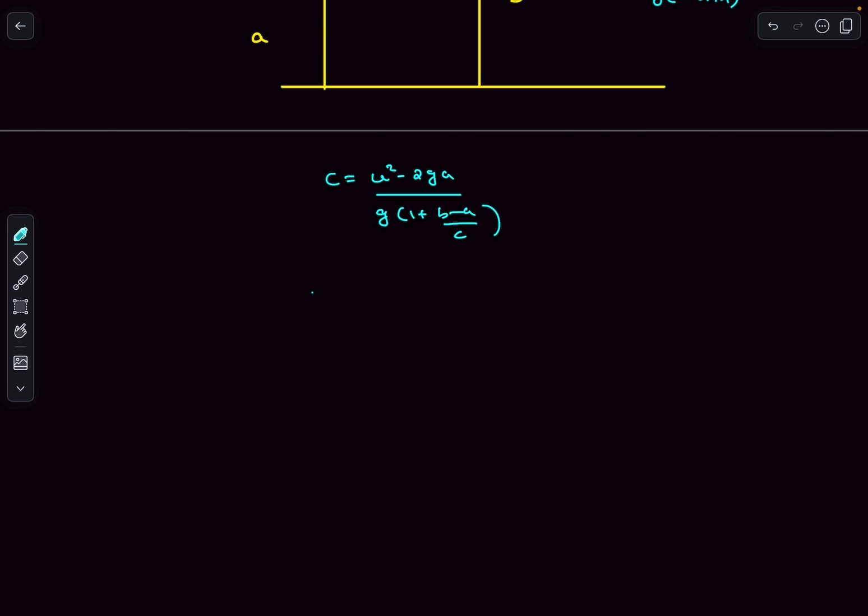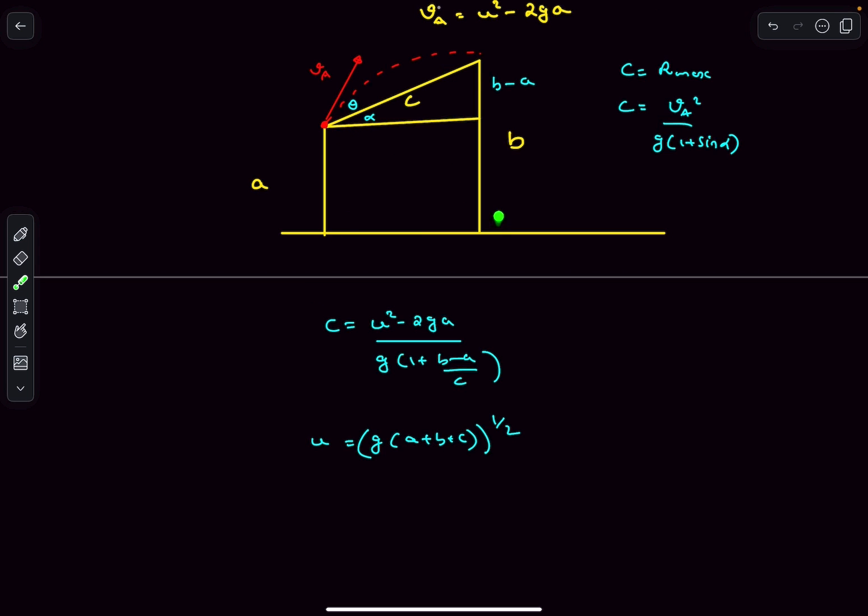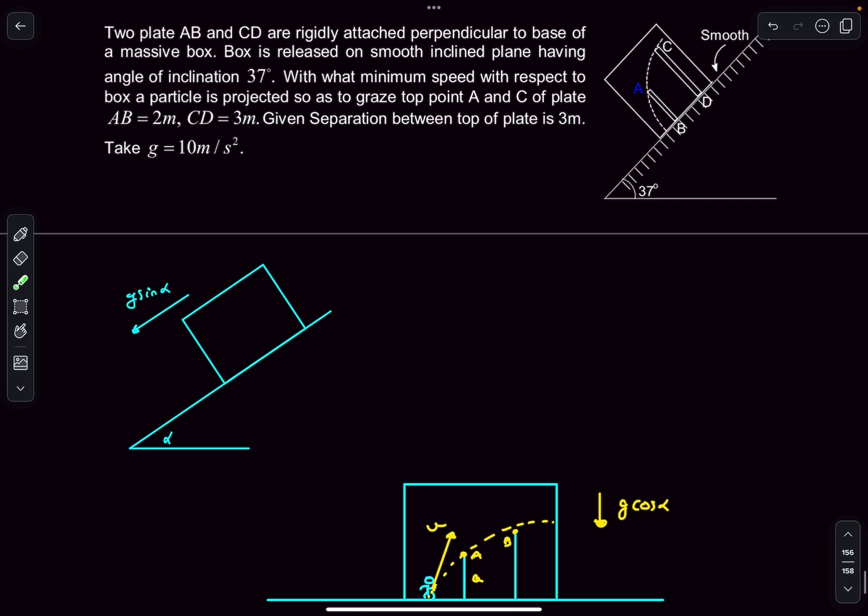After solving this, we'll get a really nice result: u equals square root of g times (a plus b plus c), where a is the length of the first plate, b is the length of the second plate, and c is the distance between the top of the plates. If you observe the question, that is exactly what they have given us.